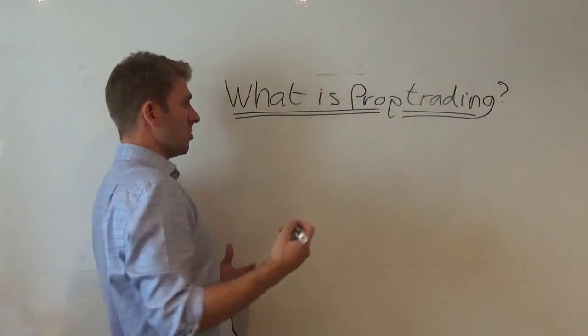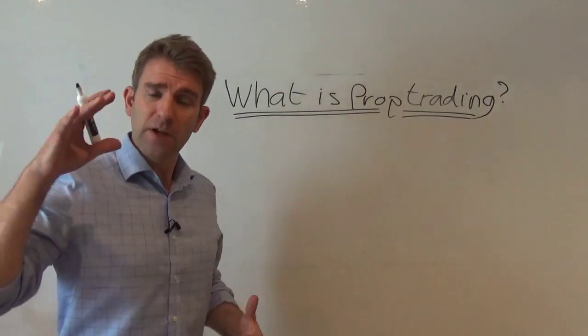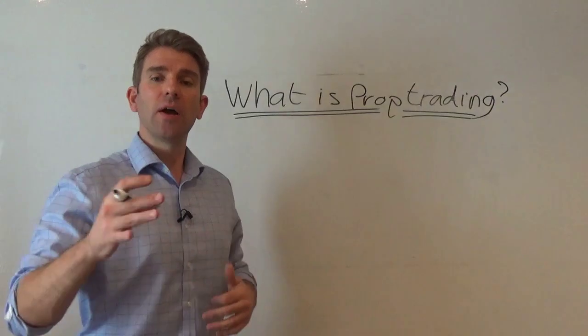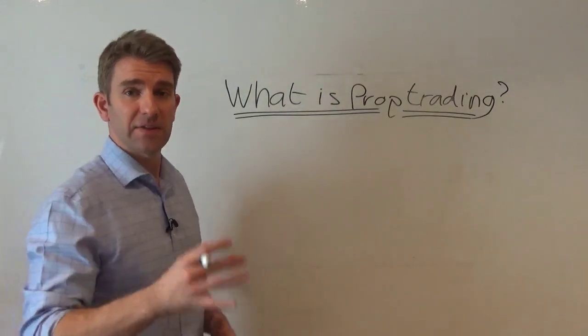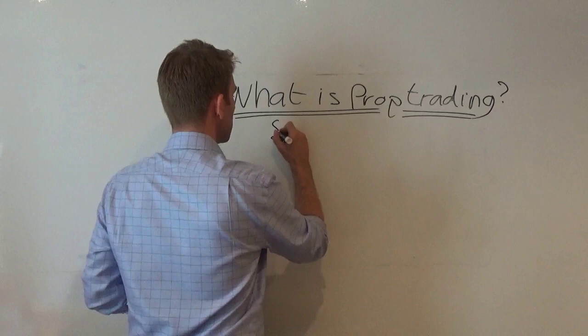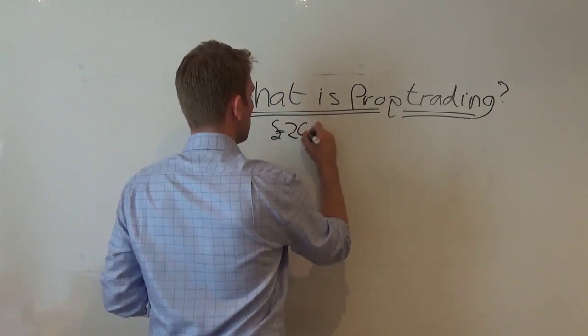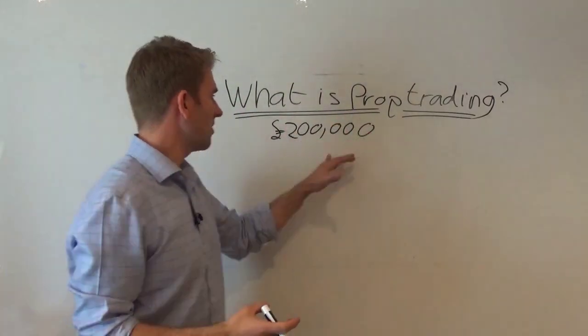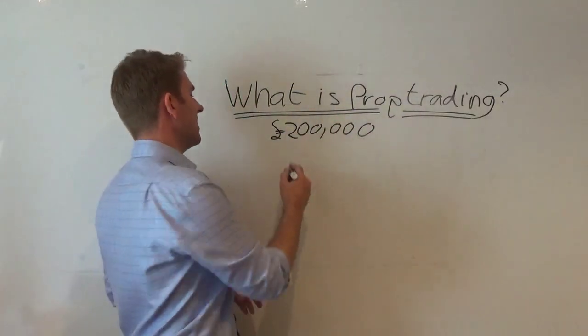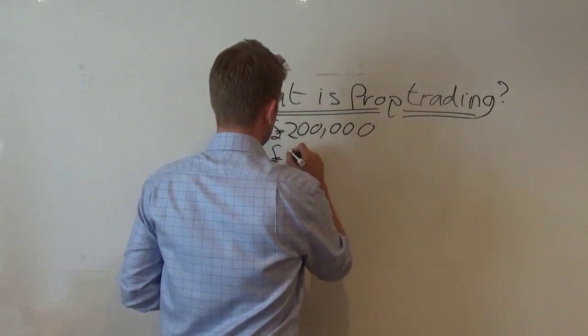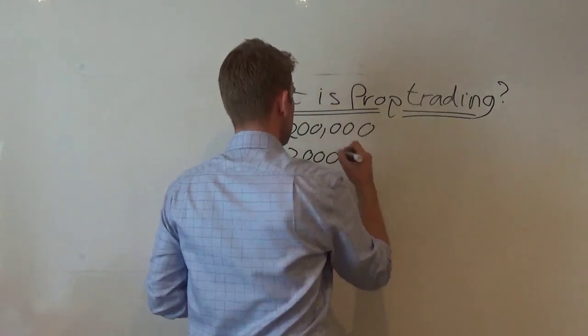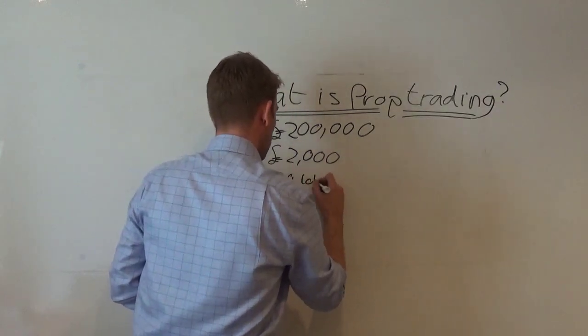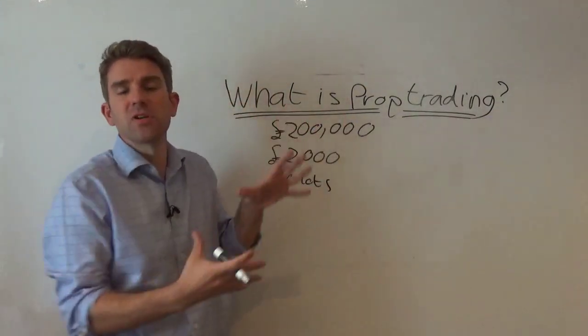You might go to a prop trading desk and they might say, let's say your name is James, you're doing very well in your trading, we'd like to invite you onto the desk. The desk would work like this: we're going to give you a bankroll of $200,000. Depending on what you're trading, I'm going to give you daily risk parameters of let's say $2,000 to start off with. You can have a maximum position size of 20 lots - I'm just making these numbers up now.